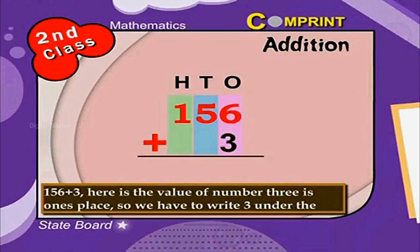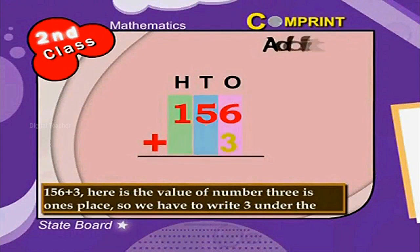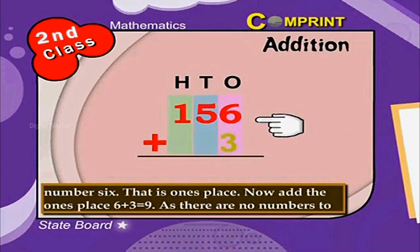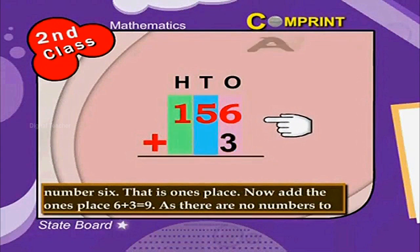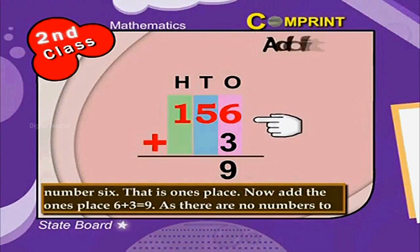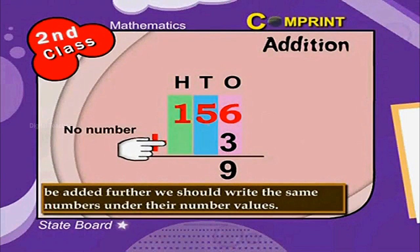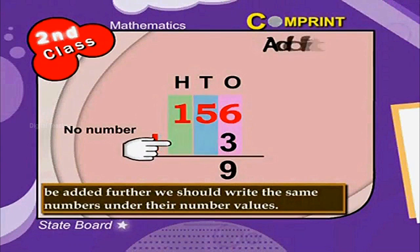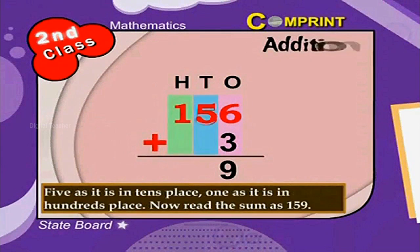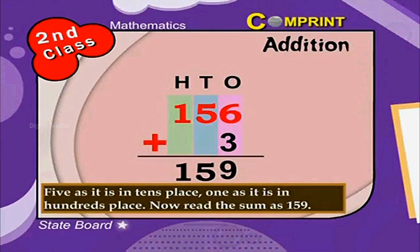Here is an example: 156 plus 3. The value of number 3 is in ones place, so we have to write 3 under the number 6, that is ones place. Now add ones place: 6 plus 3 is equal to 9. As there are no numbers to be added further, we write the same numbers under their number values: 5 as it is in tens place, 1 as it is in hundreds place. Now read the sum as 159.